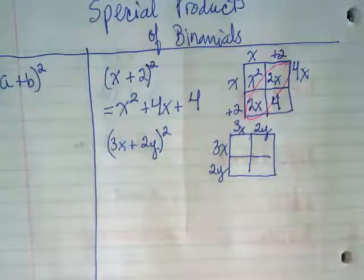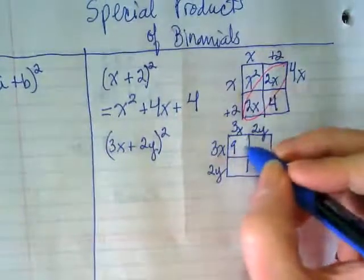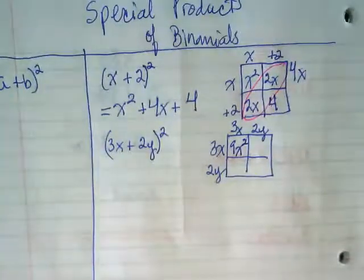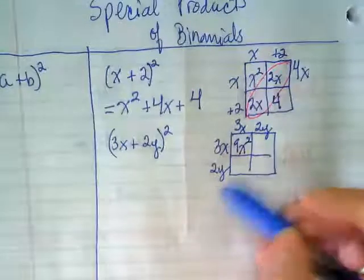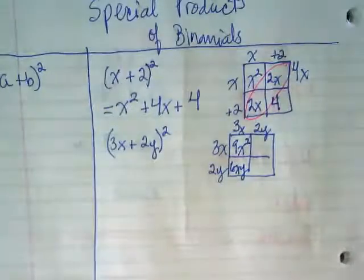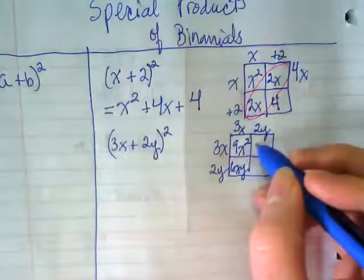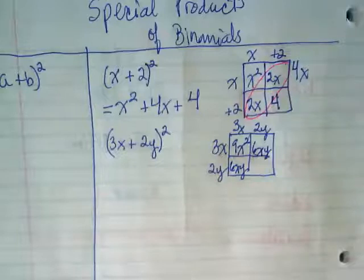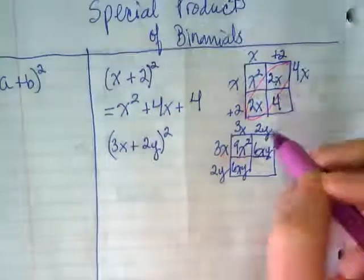We end up with 3 times 3 is giving us 9, x times x gives us x². 3x times 2y is going to give us 6xy. And what happens with this box? 6xy. What do you notice about the like terms again? They're crosswise, and they're the same, aren't they?